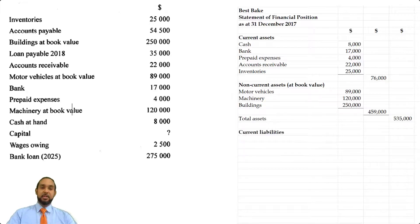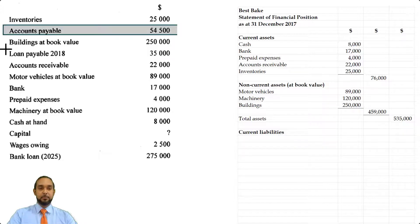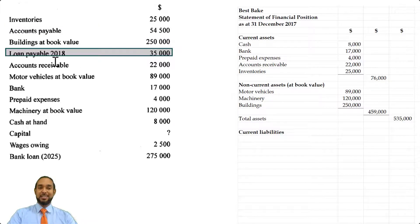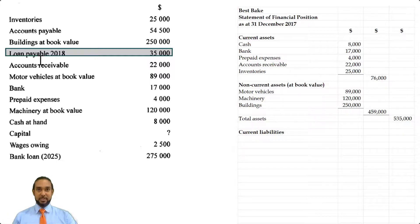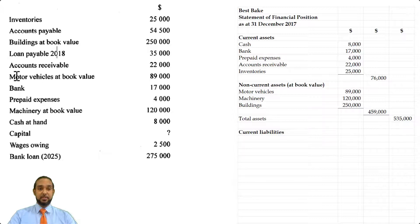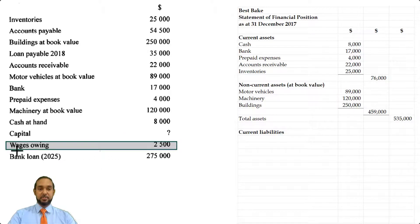Then we're going to start with the current liabilities. We have accounts payable, and we have a loan payable 2018. The reason that is a current liability is because the balance sheet date is December 31st, 2017 — so anytime during 2018 it's within one year from the balance sheet date, which makes this loan a current liability. We also have wages owing, which is an accrued expense, and we know that's a current liability.